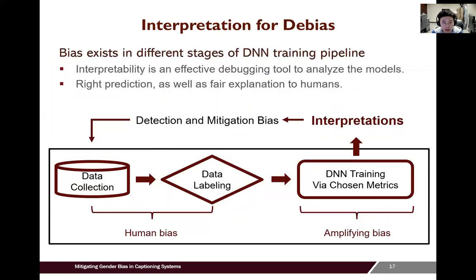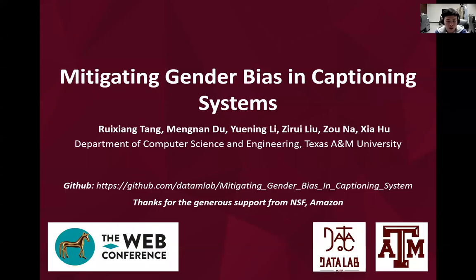In summary, bias exists in different stages of the training pipeline. For example, during data collection there are human biases, and during training the model might further amplify bias in the training data. Interpretation tools could help us understand the model's decision process, and thus become an effective debugging tool to detect potentially unfair models. We can then fine-tune the model based on the bias found by interpretation tools — for example, by cleaning the data and making the dataset more balanced, or by designing bias-tolerant models to further solve the fairness problem. Our code and the designed benchmark dataset are publicly available. Please check our paper for more interesting details. Thank you.